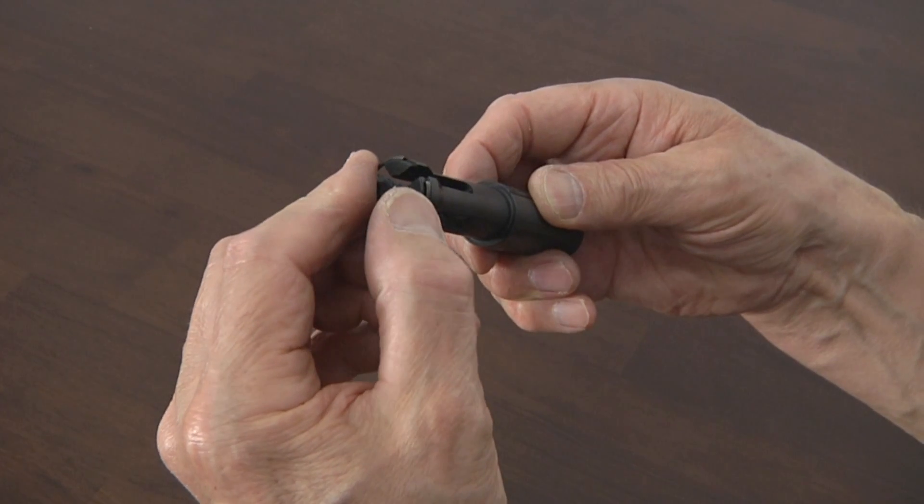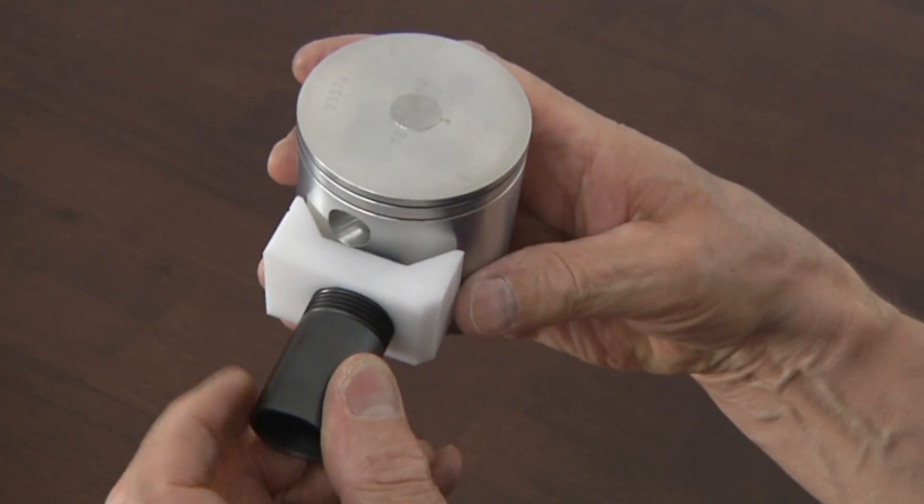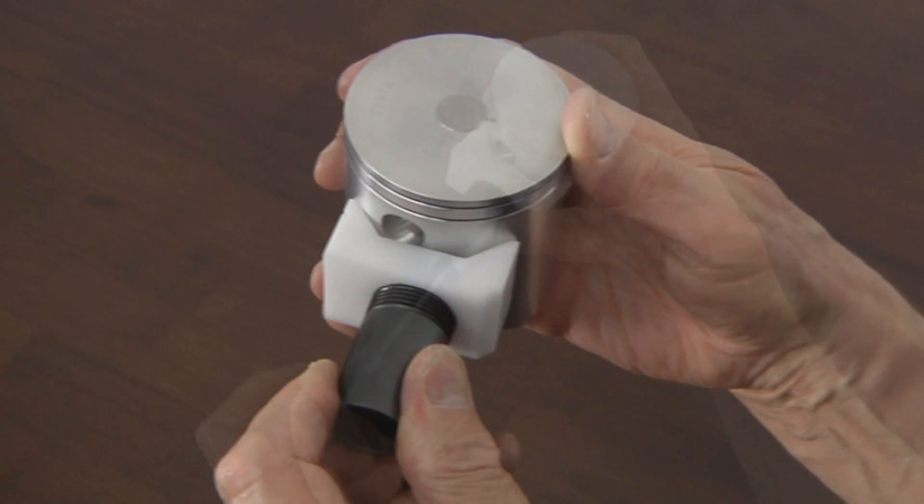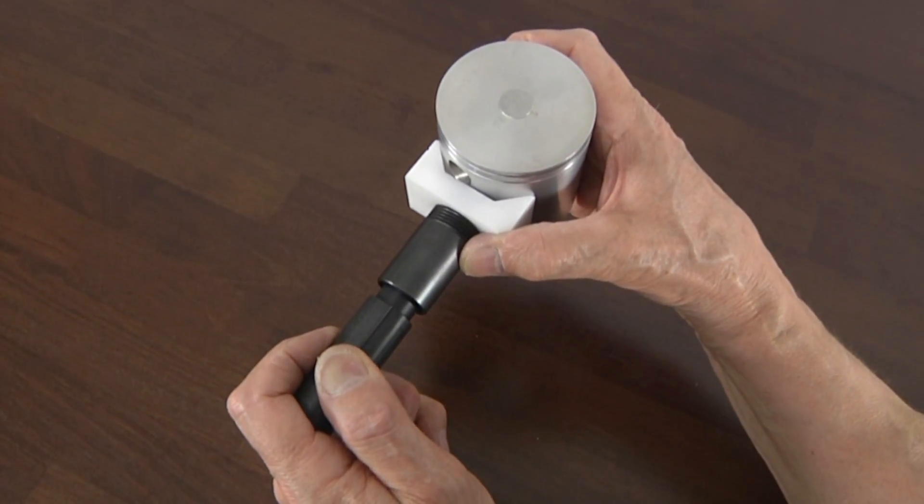Set the C-clip on the installer nose like this. Insert the sleeve into the wrist pin bore, then push the installer home. That's it. Just one push and you're done.